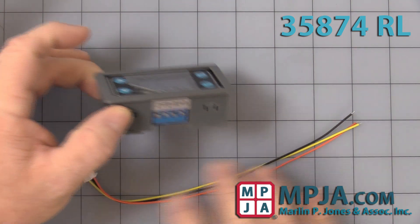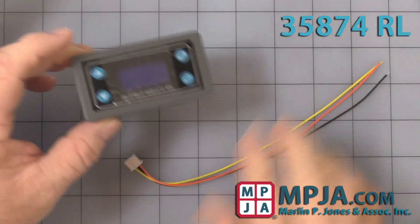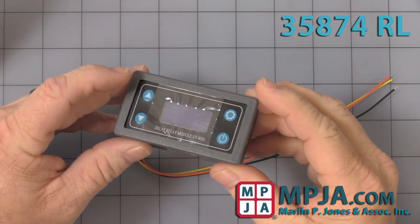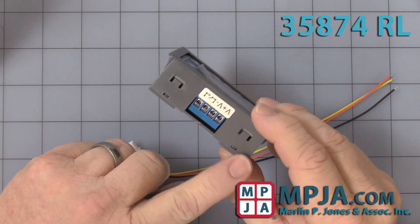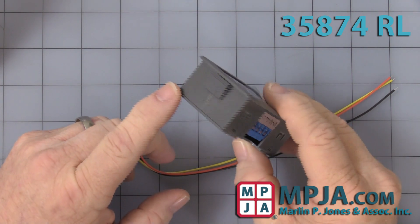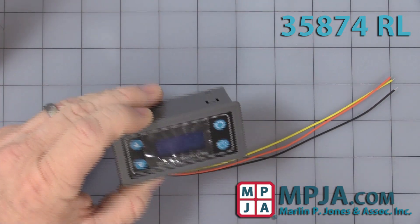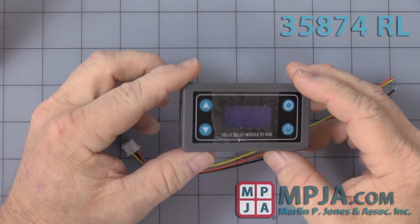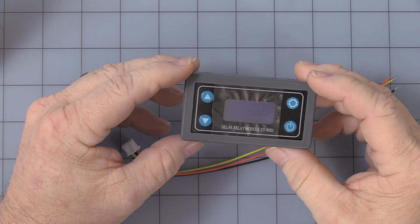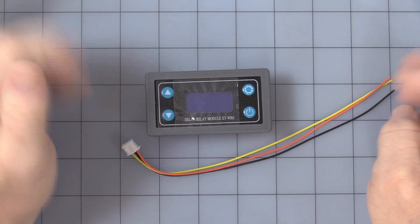This is how it comes. We do supply the little connector header pin. As you can see, it's a nice little panel mount. Mounts in a 71 millimeter by about 39 millimeter cutout. It operates off of 6 to 30 volts DC, about 15 milliamps current draw. With the relay active, it's about 50 milliamps.